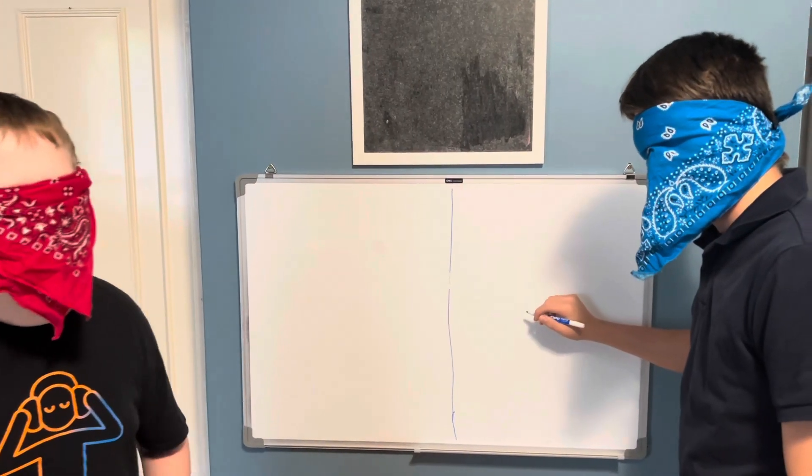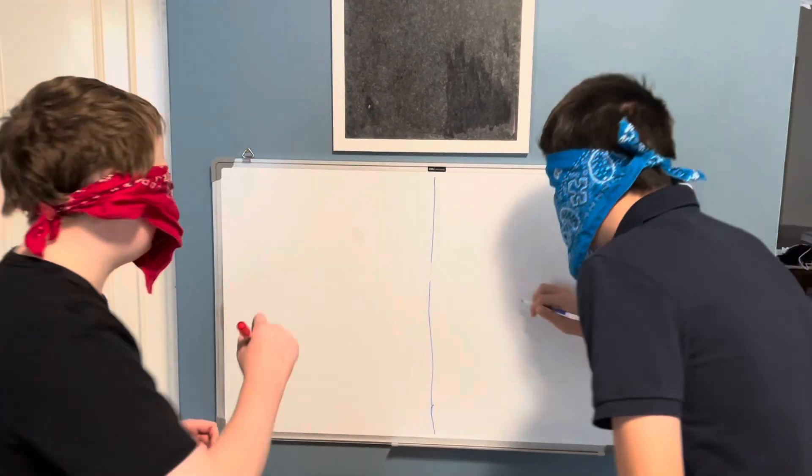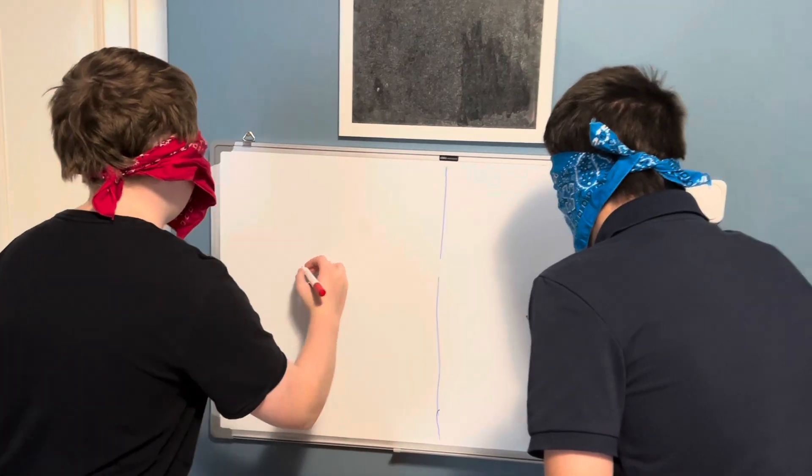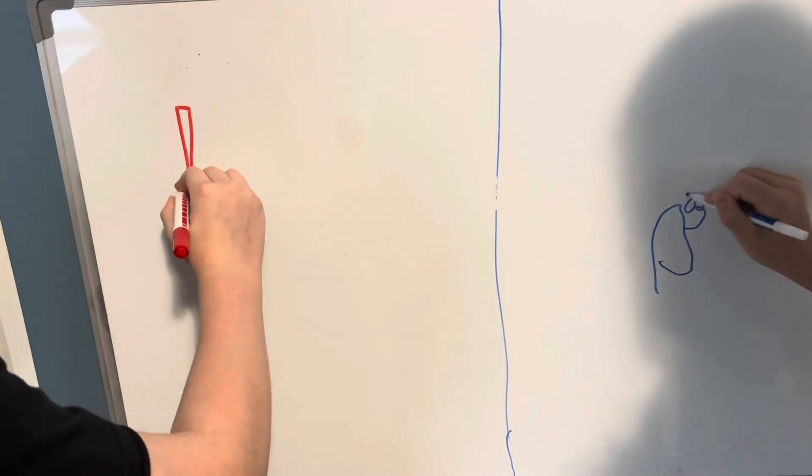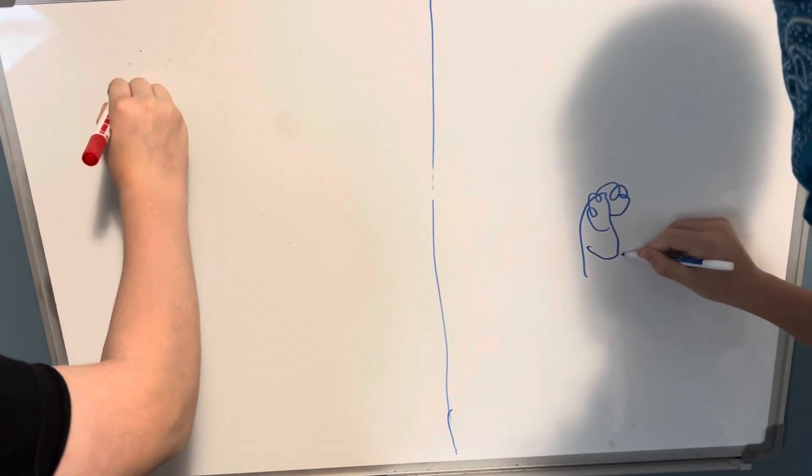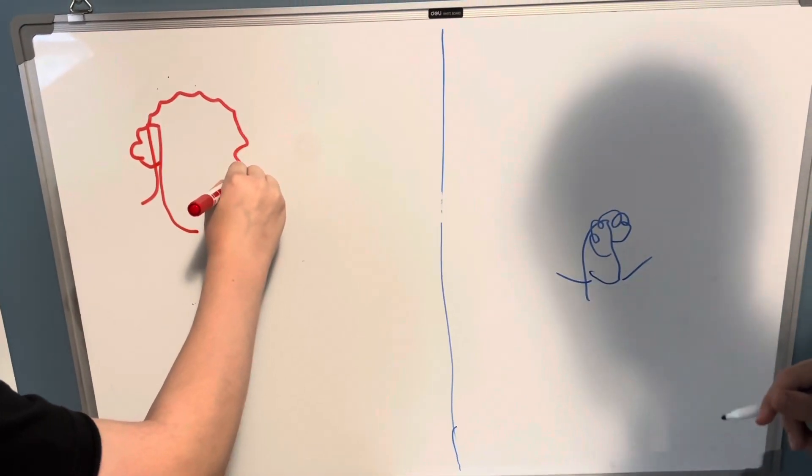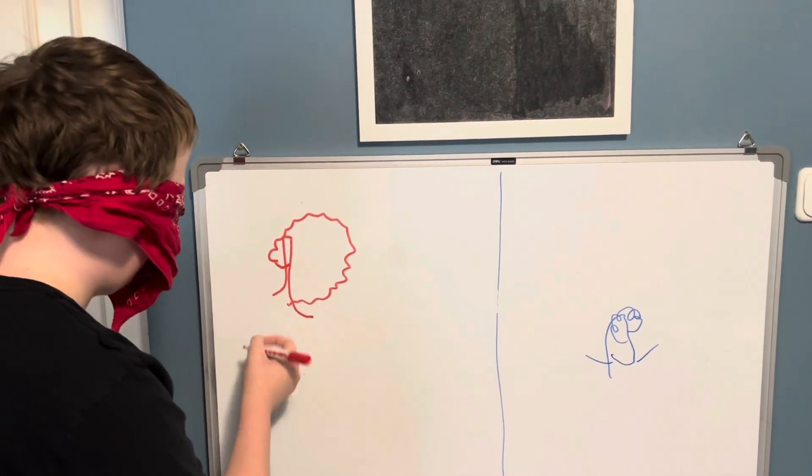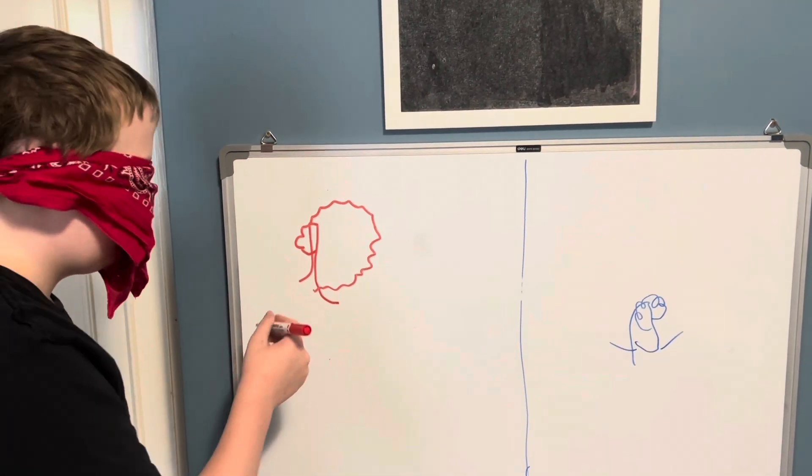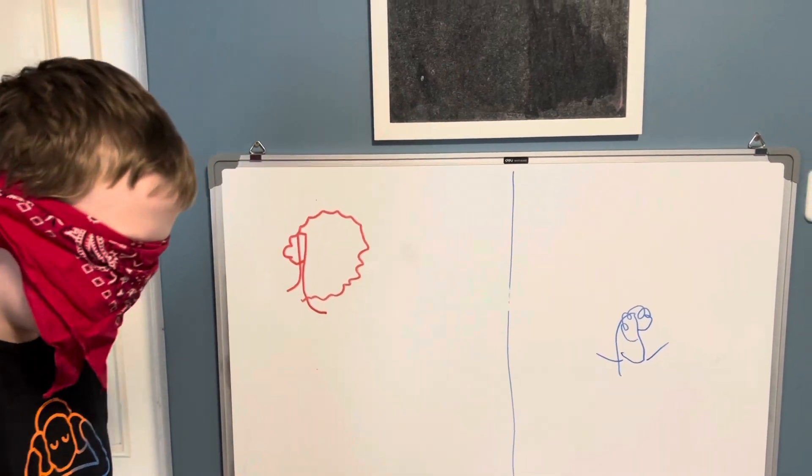Okay. Round number six. And the word is tree. Three, two, one. Begin. Okay. Okay. All right. Time is up.